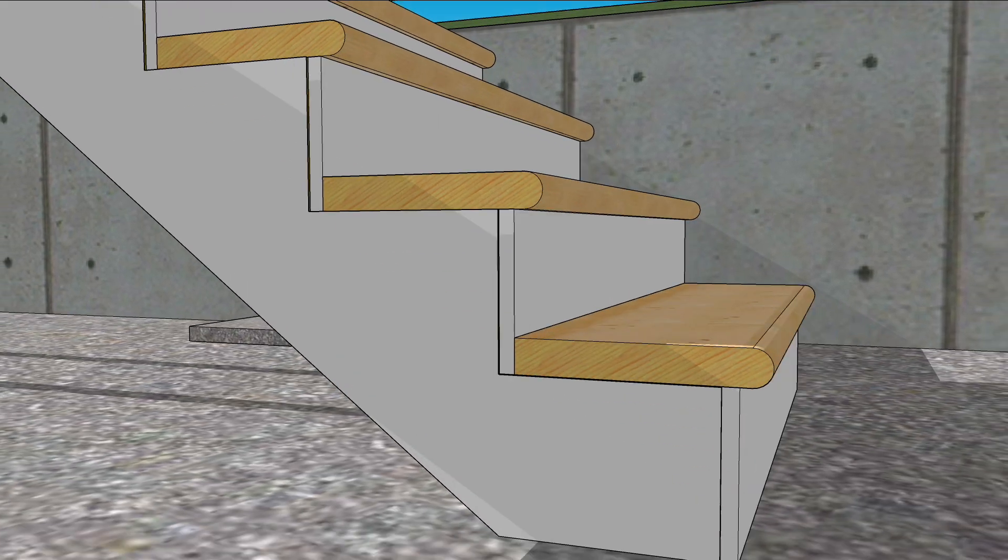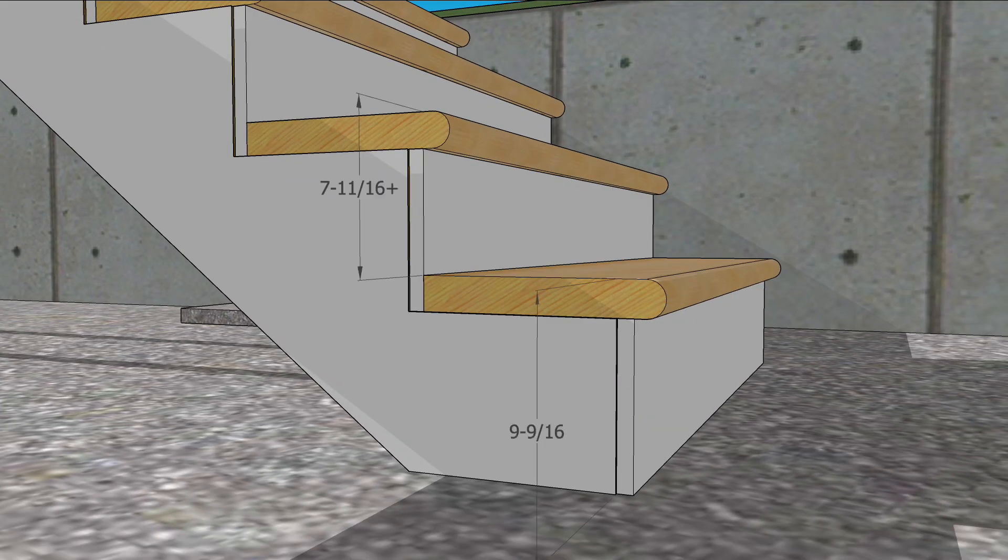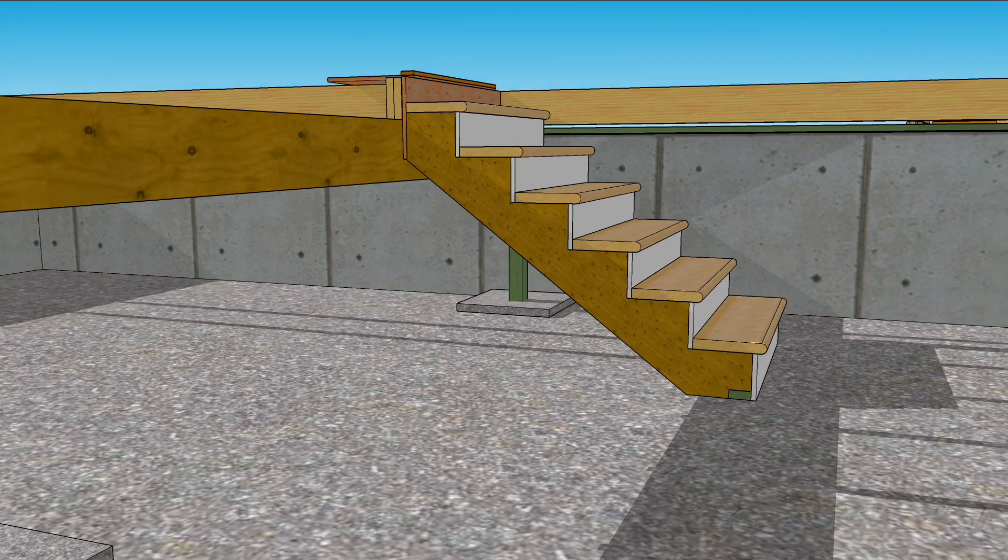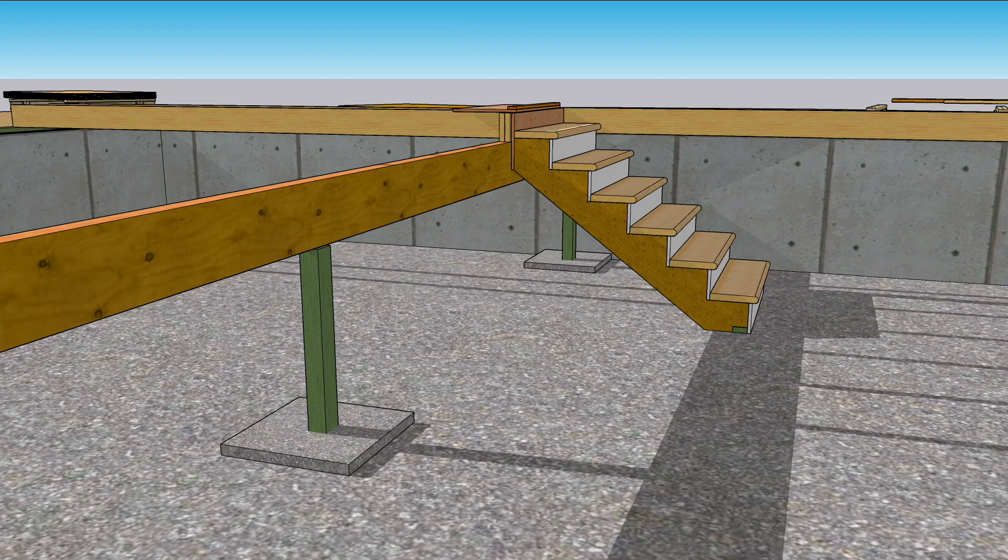A similar thing happens at the bottom. When you add treads to the stringers and not to the slab, it makes that first step a biggie. When cutting the stringer, cut the thickness of a tread off the bottom.